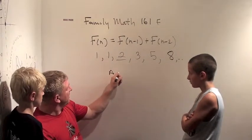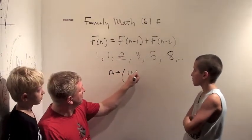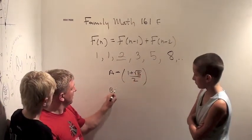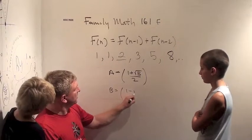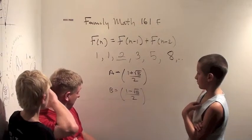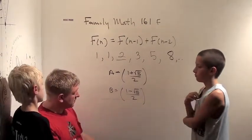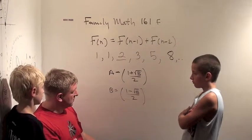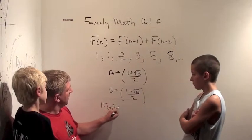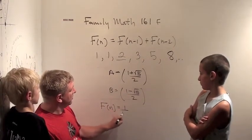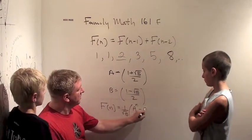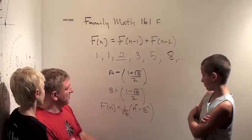So for this one if I add a equal one plus the square root of five over two and b equal one minus the square root of five over two, the nth Fibonacci number, you ready for this? Fibonacci n equals one over the square root of five times a to the n minus b to the n. Whoa. If you can believe that.